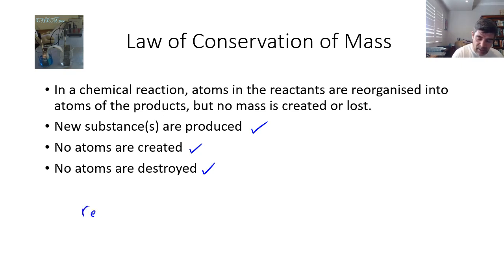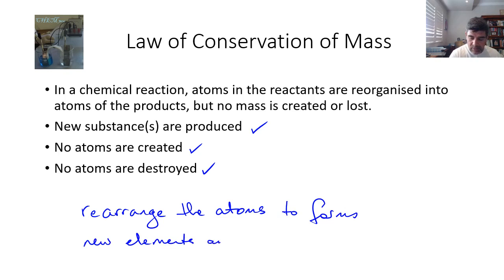All we do is rearrange the atoms and this forms new elements and or compounds. So this is what we're looking for in a chemical reaction—a rearrangement of the atoms to form new elements or compounds. The way we demonstrate this is through the use of equations.